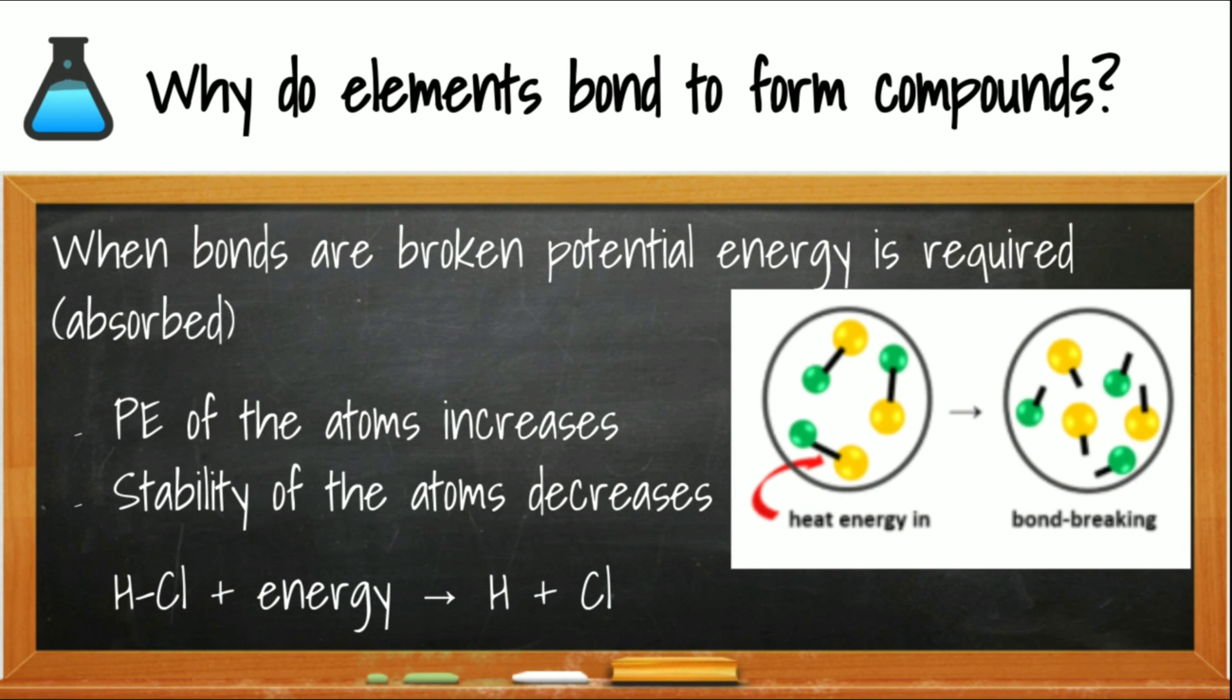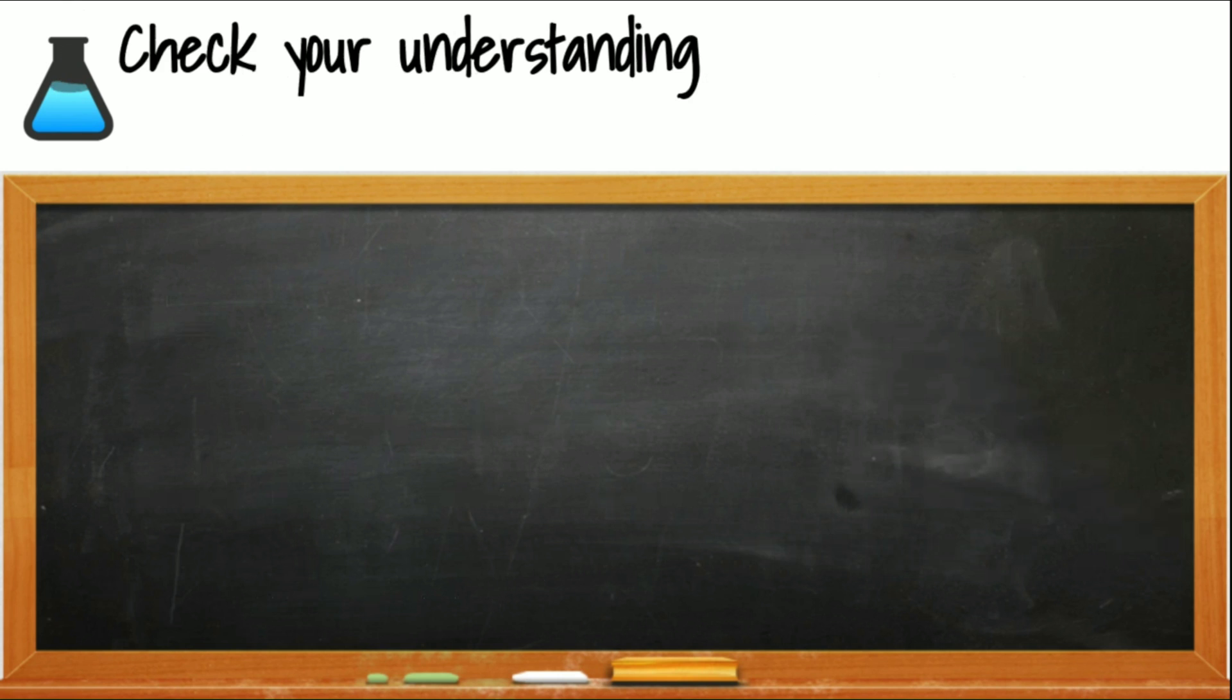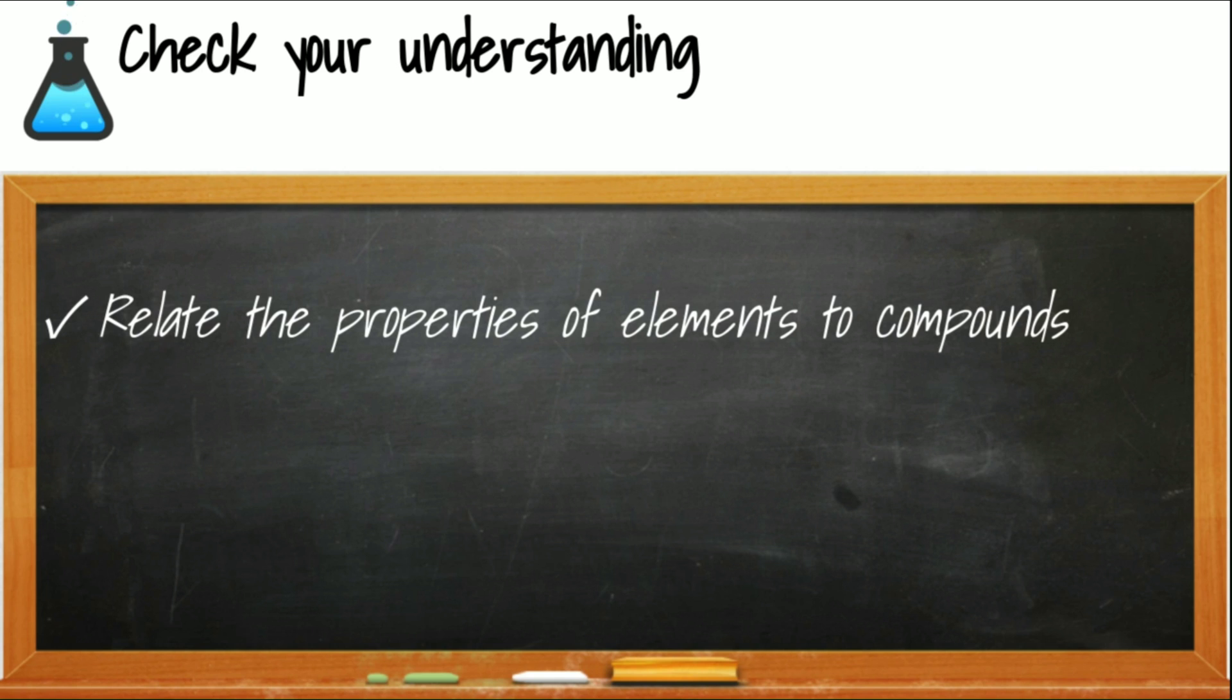And the reverse is also always true. When bonds are broken, you have to put in potential energy. I always kind of remember, if I want to break the bond, I have to go hi-ya, and I have to put in energy to break that bond apart. When bonds are broken, energy must be added because the potential energy is going to increase because the positions of the atoms will also increase in the bond-breaking process. You should be able to relate the properties of elements to compounds or basically understand that the properties of elements are independent of the compounds that they create.